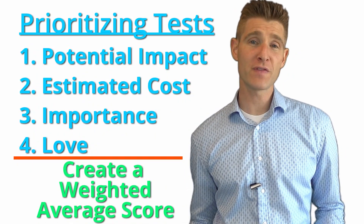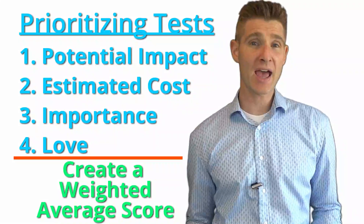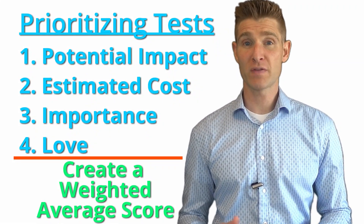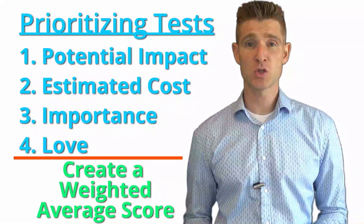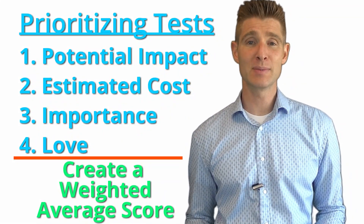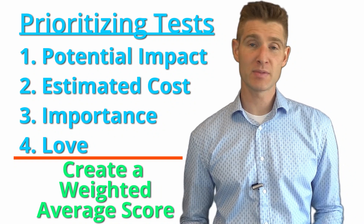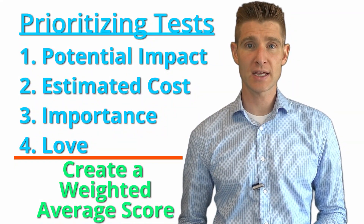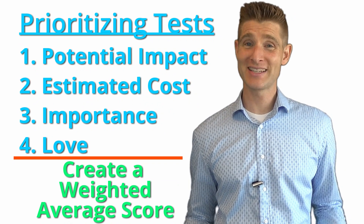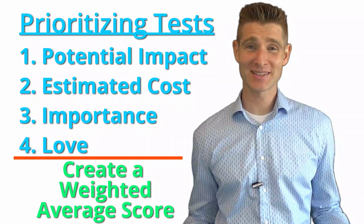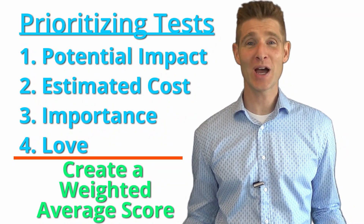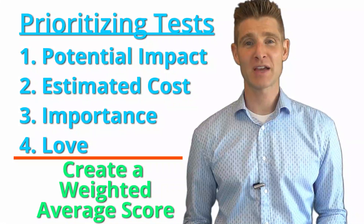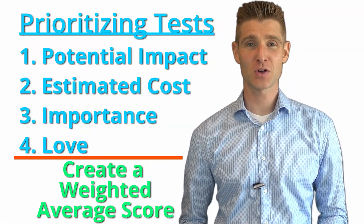If you also have other factors important to your business — because of constraints or other considerations — that's where you would add them and create an average score for each test idea. Once you have an average score, it's easy to compare across test ideas, prioritize them, and make sure you're running the most impactful tests first.